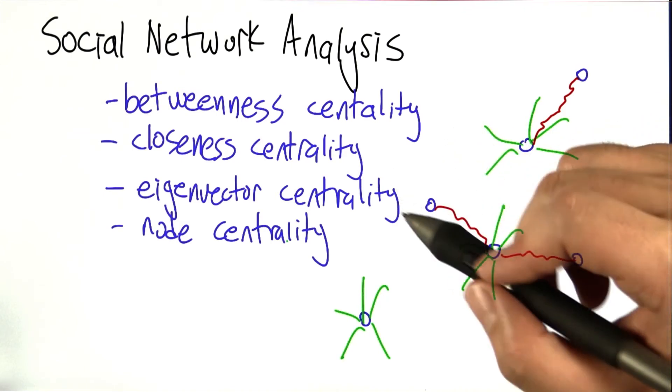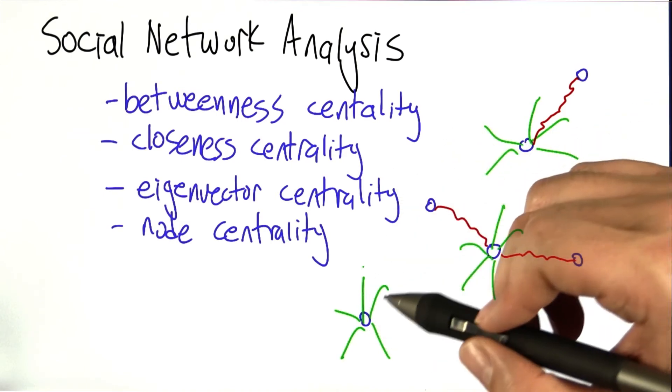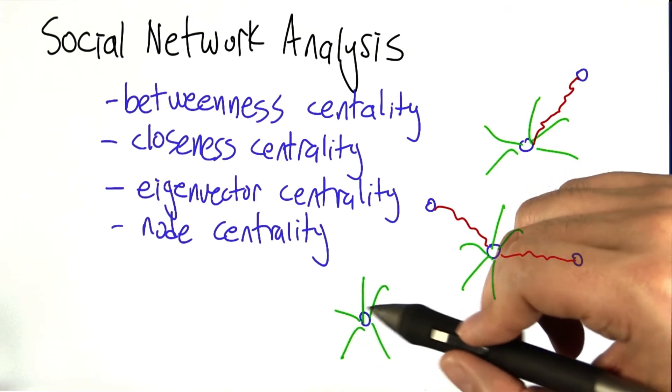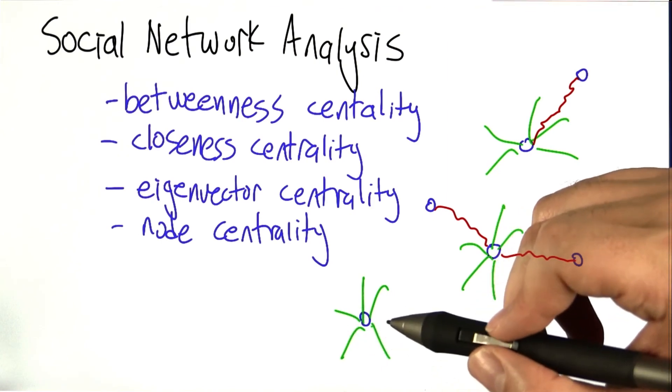Node centrality is actually a much simpler concept. It just says that a node is central if it has lots of edges, if it's very well connected. And this is well connected in a very local sense, just in terms of the degree of the node or the number of neighbors that it has.